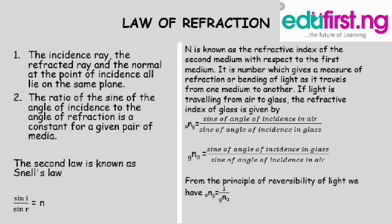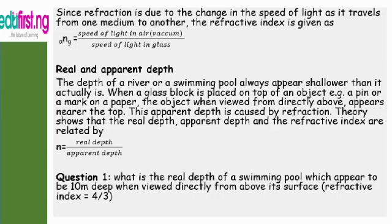If light is traveling from glass to air, the refractive index is given by the sine of the angle of incidence in glass divided by the sine of the angle of incidence in air. From the principle of reversibility of light, the refractive index when traveling from air to glass equals one over the refractive index when traveling from glass to air. Since refraction is due to the change in speed of light, the refractive index also equals the speed of light in air or vacuum divided by the speed of light in glass.